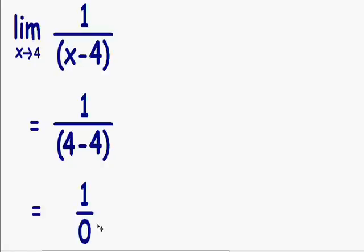And any time the denominator is equal to 0, the function is undefined. And any time it's undefined, we can't use the plug and chug method to solve the limit.